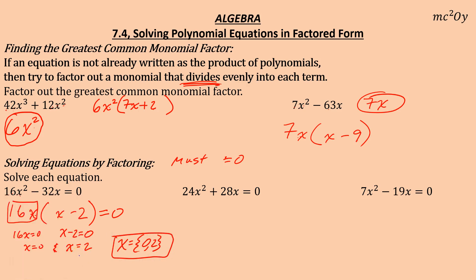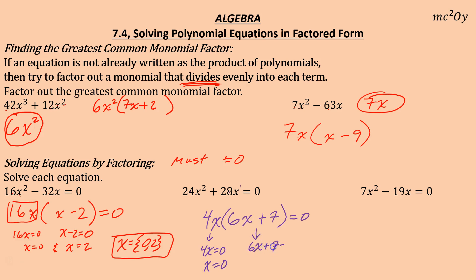For the next equation: what goes into 4 and 28? That's 4. What goes into x² and x? The smaller power, x. Factoring out 4x: 4x(6x + 7) = 0. Wait — 4 × 6 = 24 and 4 × 7 = 28. Applying the zero product property: 4x = 0 gives x = 0. And 6x + 7 = 0 — subtract 7, divide by 6 — gives x = −7/6. Solutions are {0, −7/6}.